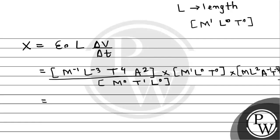Now, looking at the numerator and denominator, the T terms: T⁴ from epsilon-naught and T⁻³ from delta-V give T¹ in numerator, divided by T¹ from delta-t — so T cancels out to T⁰. For M: M⁻¹ from epsilon-naught and M¹ from delta-V cancel, leaving M⁰. For L: L⁻³ plus L¹ plus L² equals L⁰. So what remains is A² times A⁻¹, giving A¹. This is the basic dimensional formula of current.